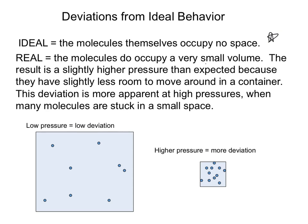This very small volume will actually end up resulting in a slightly higher pressure than you would expect because there's slightly less room for them to move around in the container, and subsequently they bump against the side of the container a little bit more, and you get a higher pressure value. When we're at low pressure, we don't really see this deviation. It's not really a big deal. That's why we can make those assumptions.